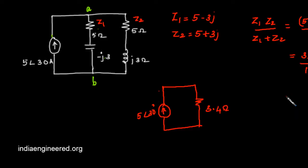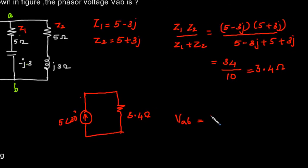So the voltage VAB will be the current into the resistance. What will be its value? 5 into 3.4, that will be 17 angle 30 volts.